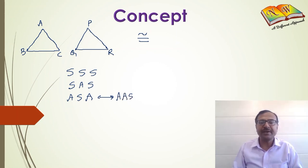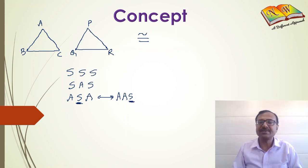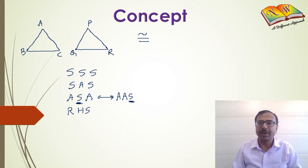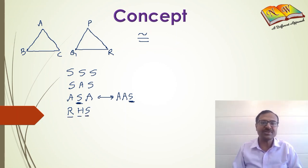The ASA rule is related to the AAS rule, where the only difference is that in ASA the side is included between the two angles, whereas in AAS the side is not included between the two angles under consideration. We also have another rule for right angle triangles, which is the RHS rule.